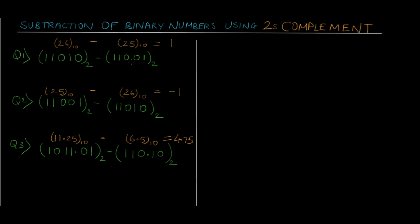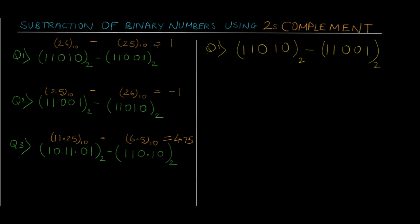In step 1, let's see question number 1. We have 11010 in binary minus 11001 in binary. I've also written the decimal values — 26 minus 25 is going to give us 1, so that should be the result for the binary subtraction as well. Step 1: we have to calculate the 2's complement of the second number.